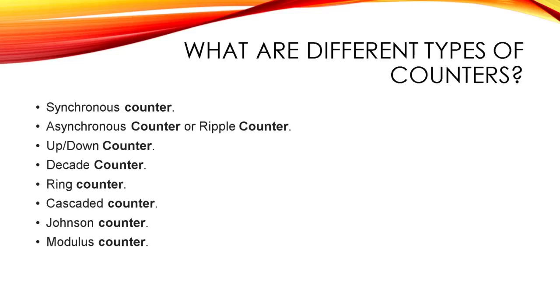So here we are going to see what are the different types of the counters. The first one is synchronous counters. The second one is asynchronous counter or it is also called as ripple counter. The third one is up or down counter. The fourth one is decade counter. The fifth one is the ring counter. The sixth one is cascaded counter. The seventh which is Johnson counter. The eighth one is the modulus counter.